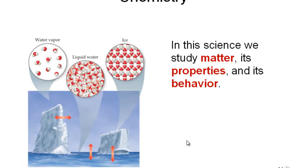Chemistry is the science of studying matter, its properties, and its behavior. When we talk about matter and its properties, as this picture shows, we are all aware of the three different states of matter which we usually see everything in: either solid state, liquid state, or vapor state. Those are the three common states of matter we usually see.